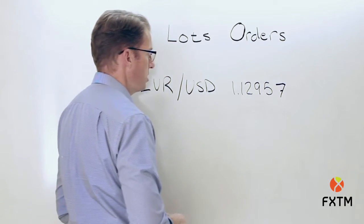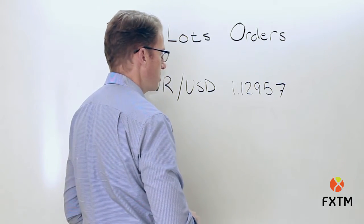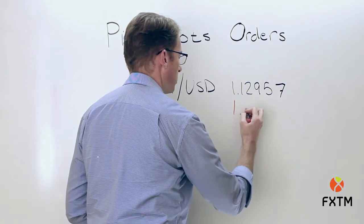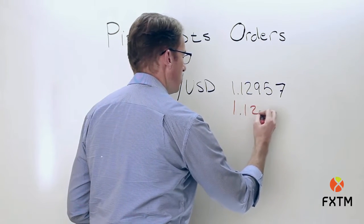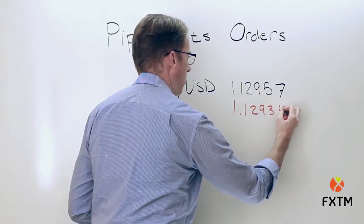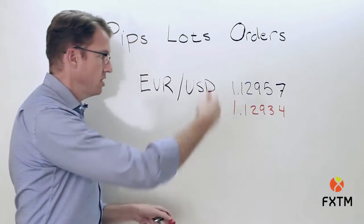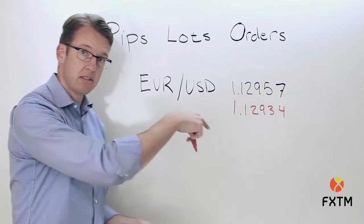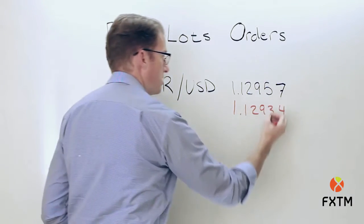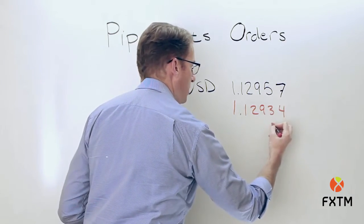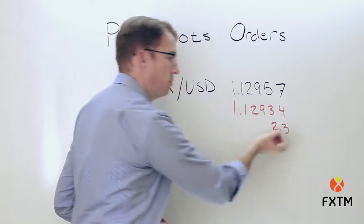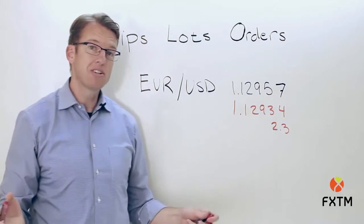Let's imagine that the EUR/USD exchange rate changes a little bit — say it drops in value and is currently 1.12934. This represents a change both in pips as well as a fractional amount of pips, or points. In this case, it has actually fallen by 2.3 pips in total.